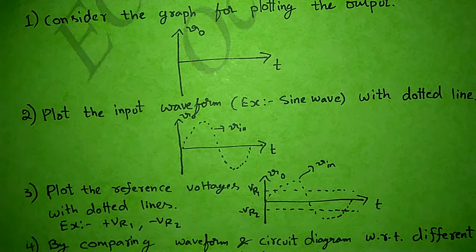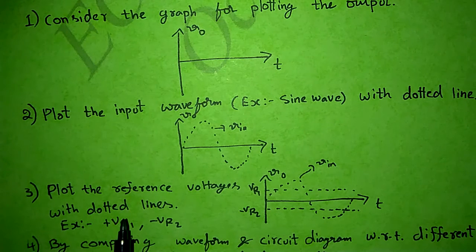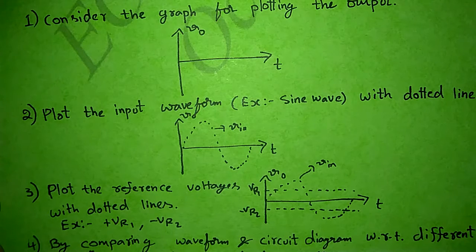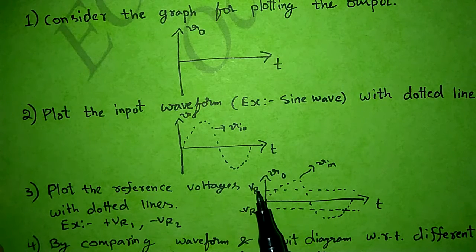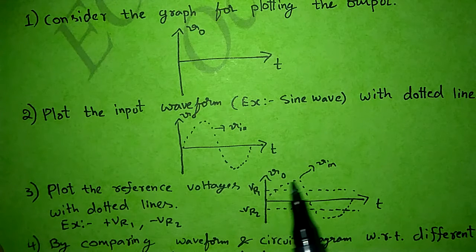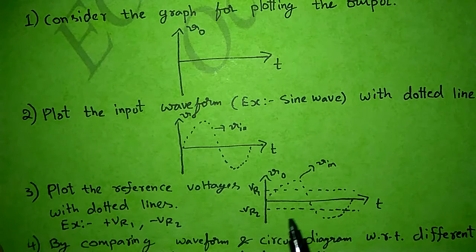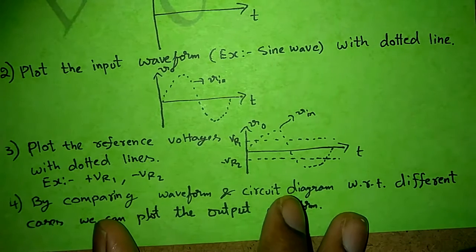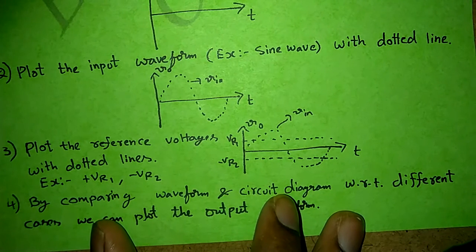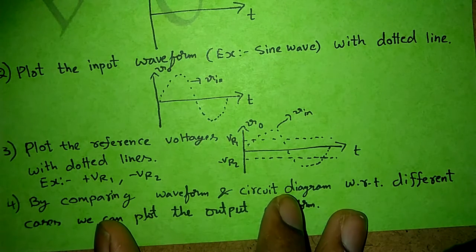The third point is I plotted the reference voltages on the output graph. Here I considered VR1 as positive and VR2 as negative, so I represented VR1 on the positive side and VR2 on the negative side. These dotted lines give the frame for plotting the output waveform.